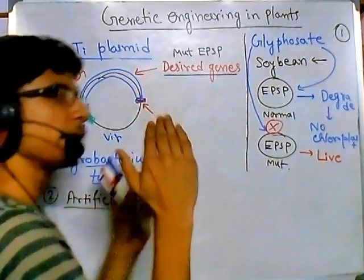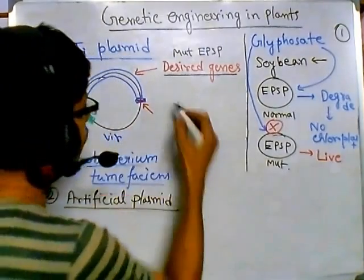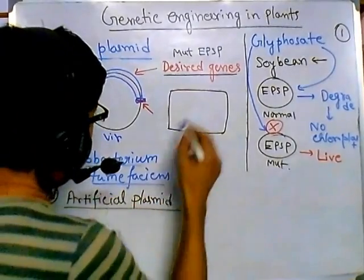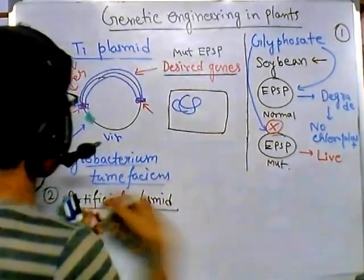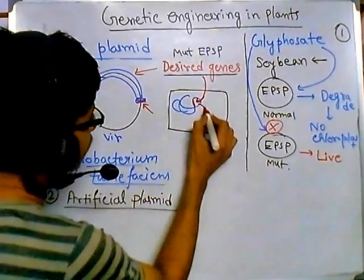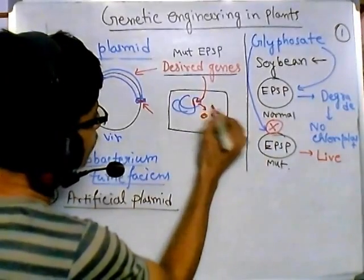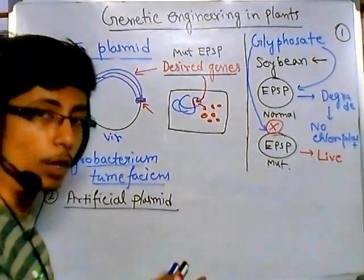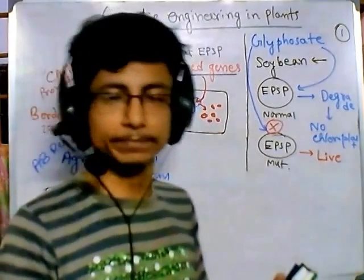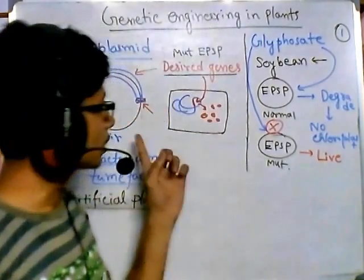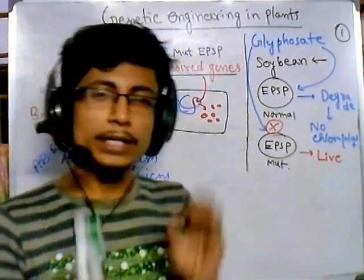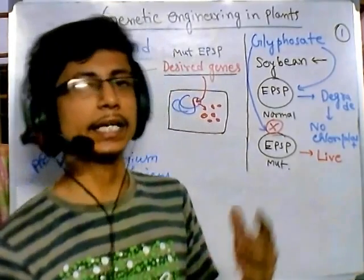The gene from the Ti plasmid will be cut out and incorporated into the plant genome. If I draw a plant cell with its genome, the desired gene — shown in red — will be incorporated into the plant chromosome. The cell will start producing the mutated form of EPSP so it can function normally and the plant can live. However, not all cells in the plant get this EPSP gene — only the cells where the bacteria is infecting receive this particular plasmid.